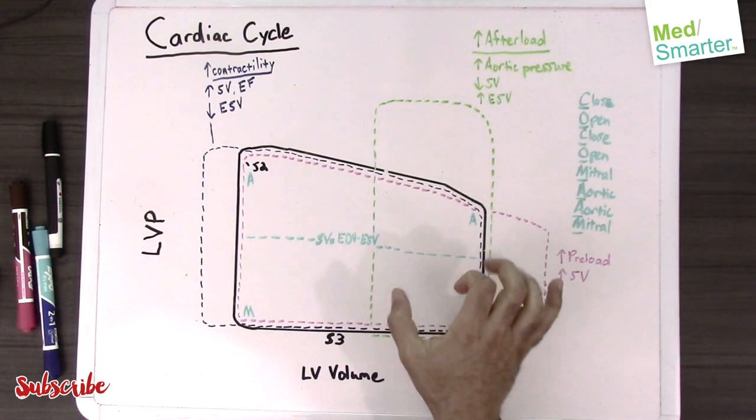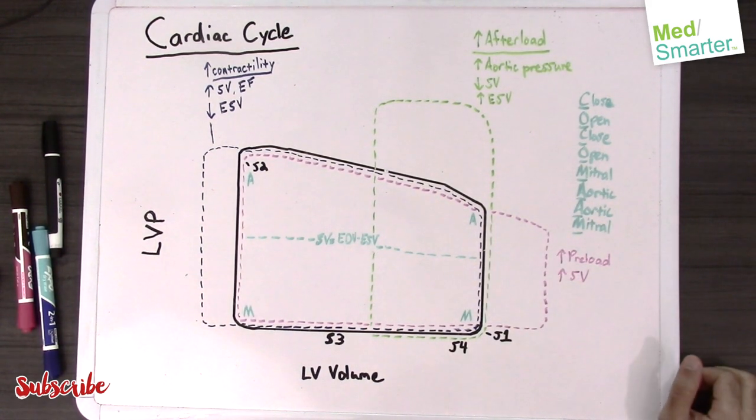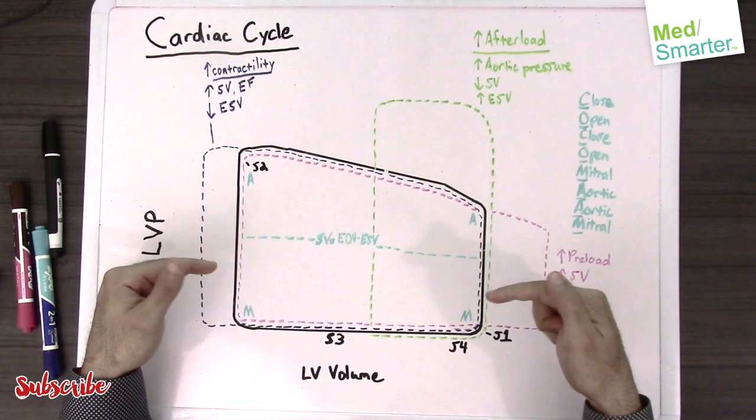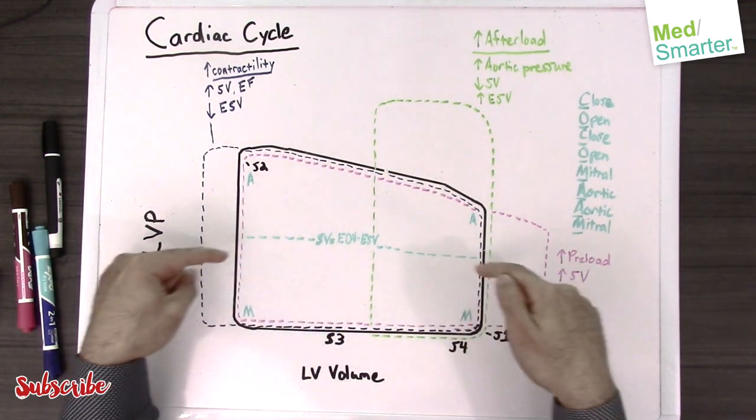If you can picture, the horizontal is greatly reduced in a patient with high afterload. This horizontal line is showing you the stroke volume. In a normal patient, we have end-diastolic volume minus end-systolic volume.